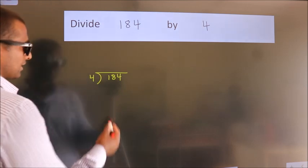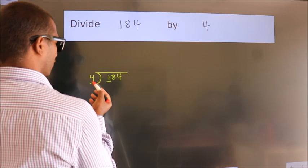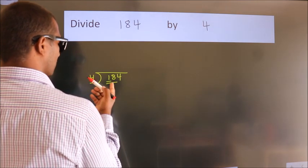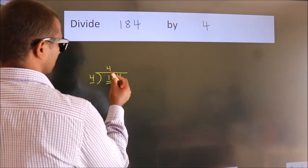Next, here we have 1, here 4. 1 is smaller than 4, so we should take 2 numbers: 18. A number close to 18 in the 4 table is 4 fours, 16.